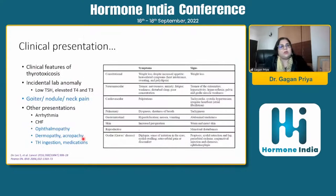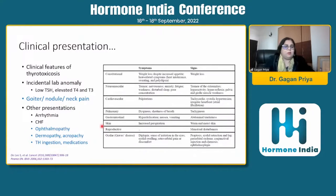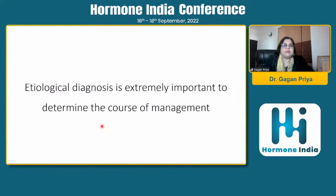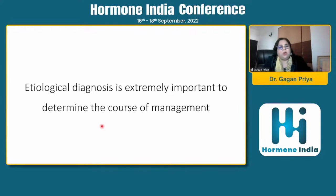The clinical picture could vary. Most patients present with frank features of thyrotoxicosis, but quite often you get referrals because of abnormal lab values. There could also be goiter or nodule presentation with neck pain, ophthalmopathy, or a history of medication ingestion. Making the etiological diagnosis is very important because it determines the course of management — the management of thyroiditis versus hyperthyroidism is entirely different, and even within hyperthyroidism, Graves disease management differs from multinodular goiter or toxic adenoma.